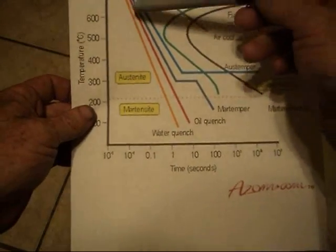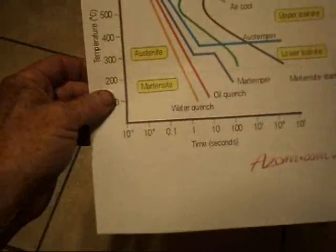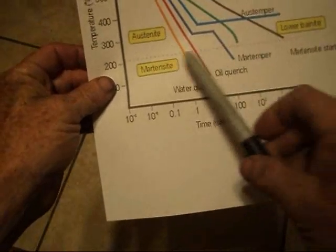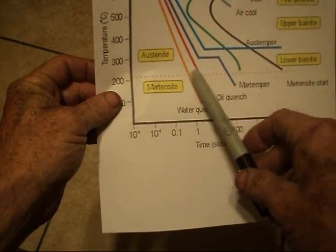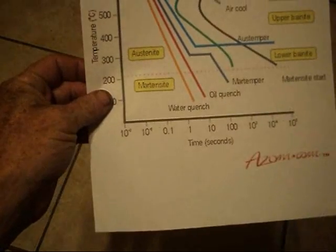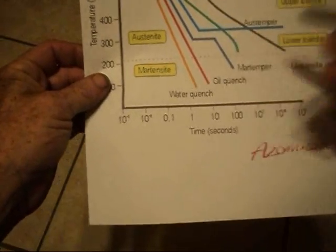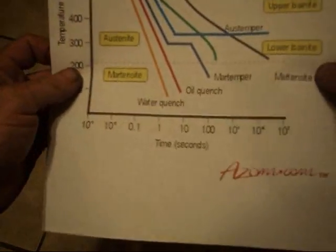Notice it doesn't start forming immediately. This one's in Celsius—I couldn't find one in Fahrenheit. The martensite start temperature is this red line right down here. It doesn't start until about four or five hundred degrees Fahrenheit.